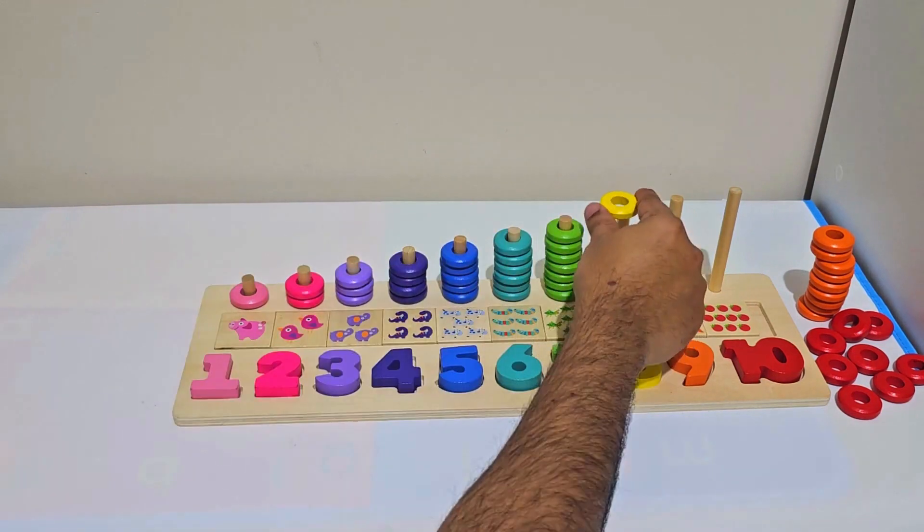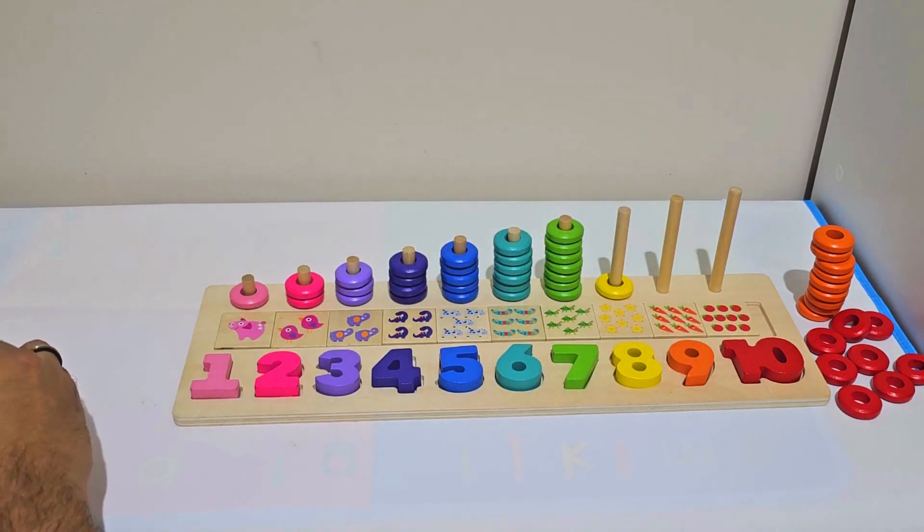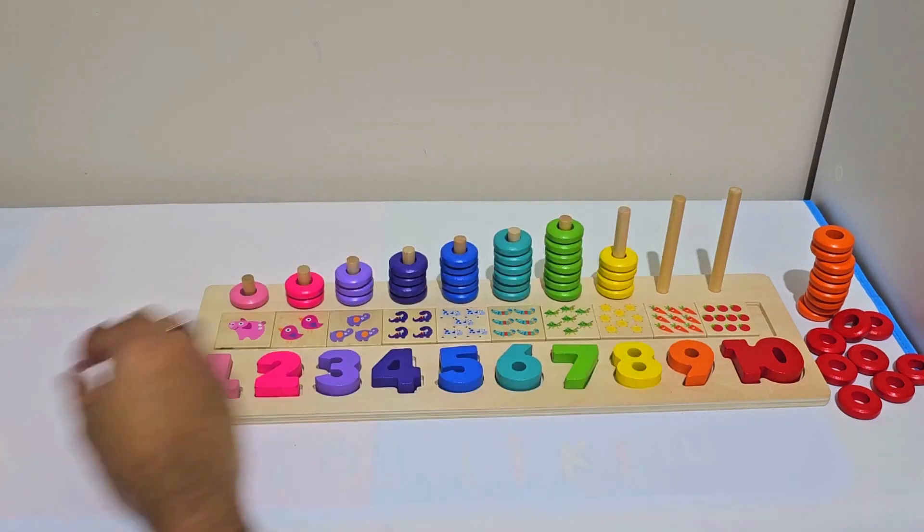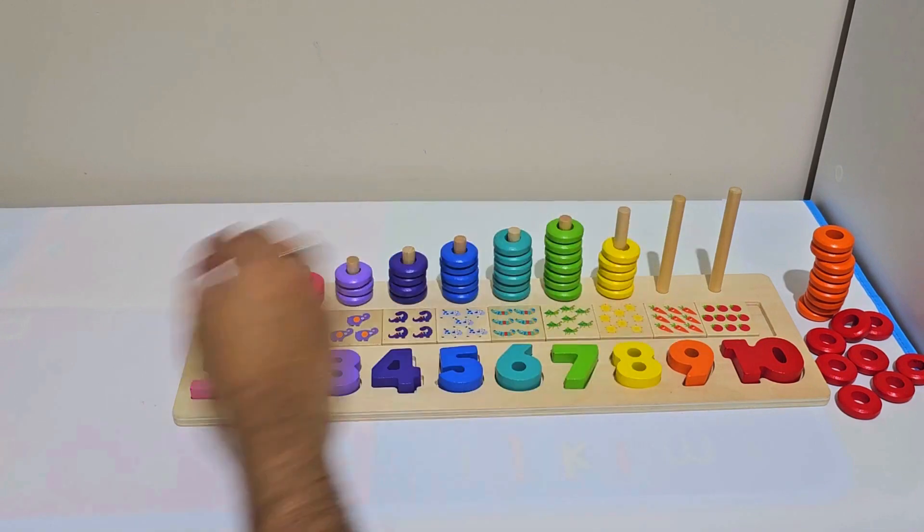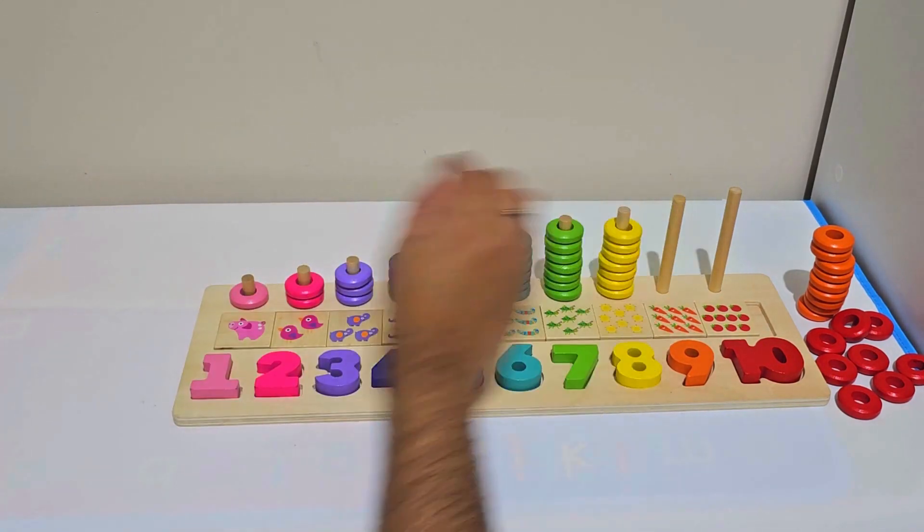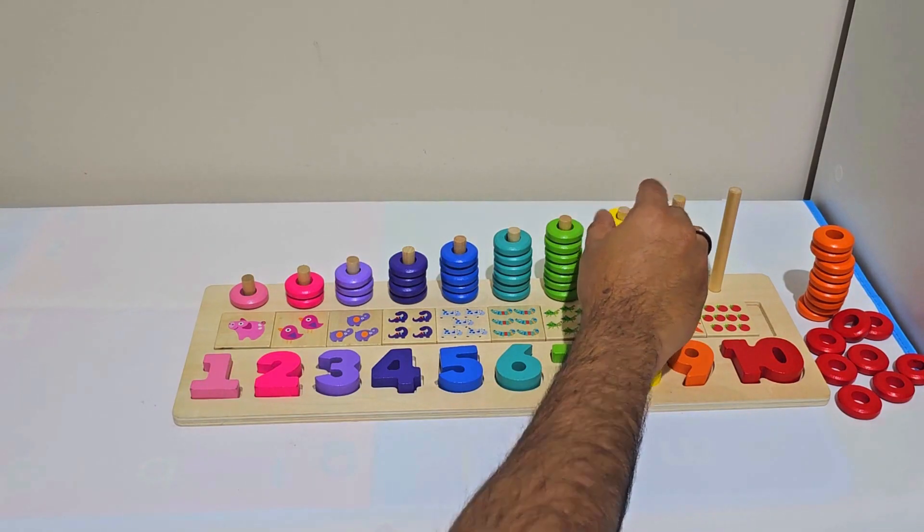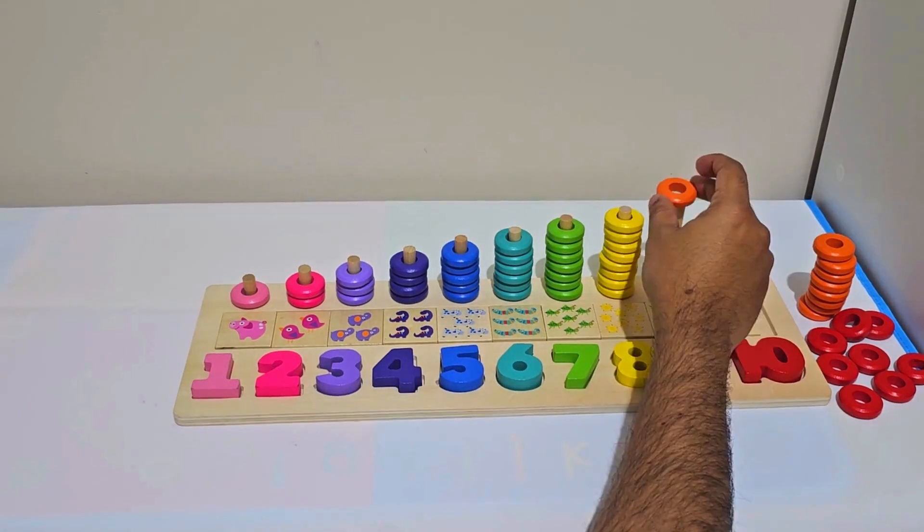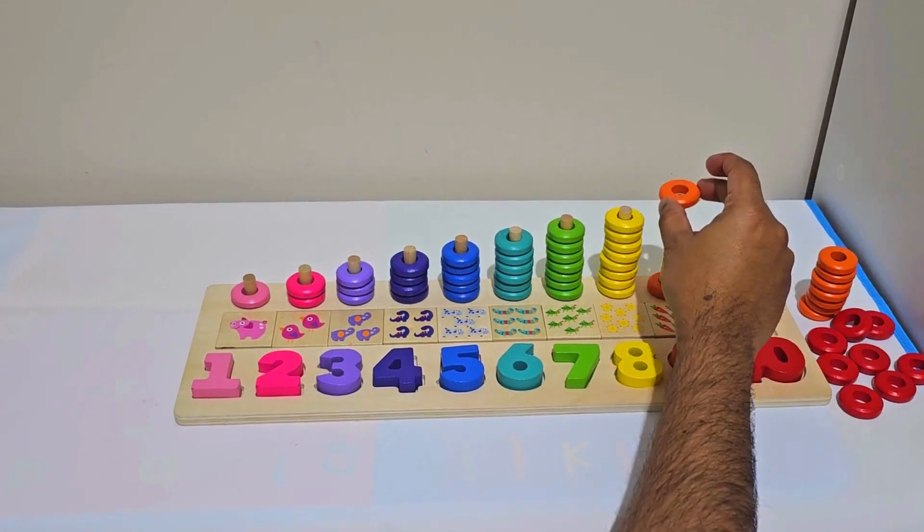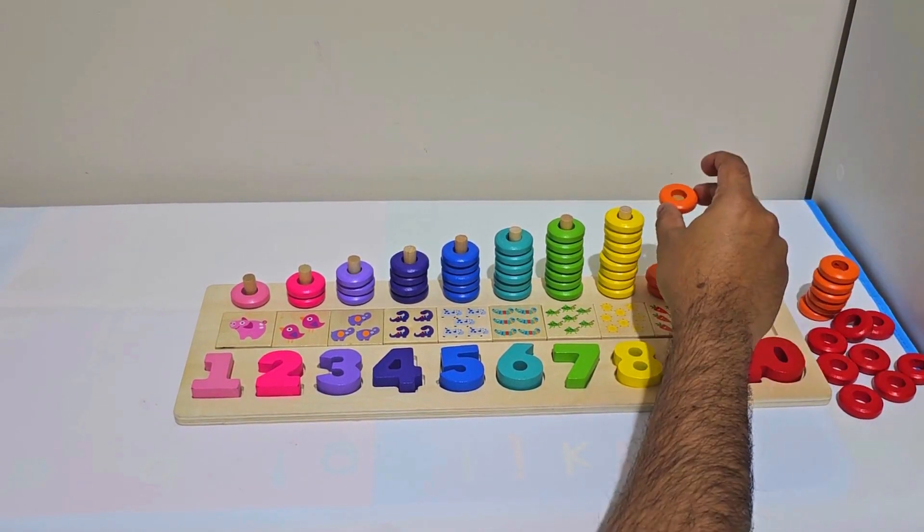Then 8 yellow colored rings: 1, 2, 3, 4, 5, 6, 7, and 8. Next we have 9 orange colored rings: 1, 2, 3, 4,